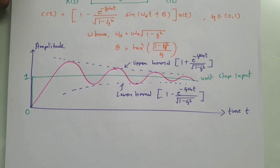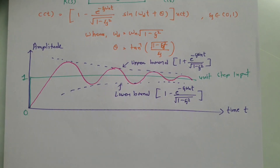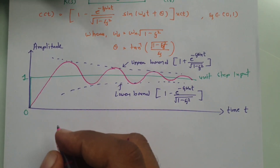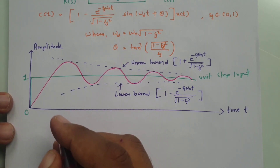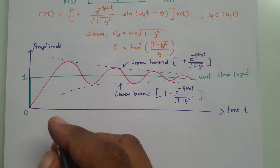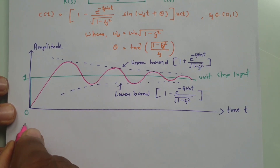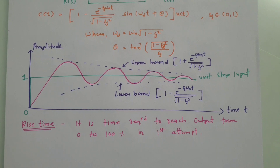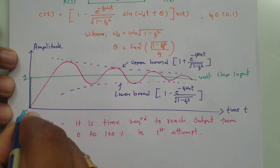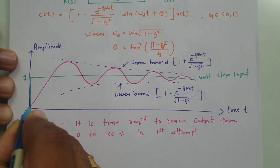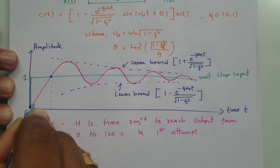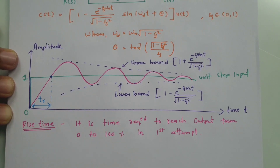Now we need to identify rise time. Let me define rise time first, and then show how to calculate it graphically. Rise time is the time required for the output to reach from 0 to 100 percent in the first attempt. You can see the output starts at 0 percent and reaches 100 percent, and that elapsed time t_r is the rise time.